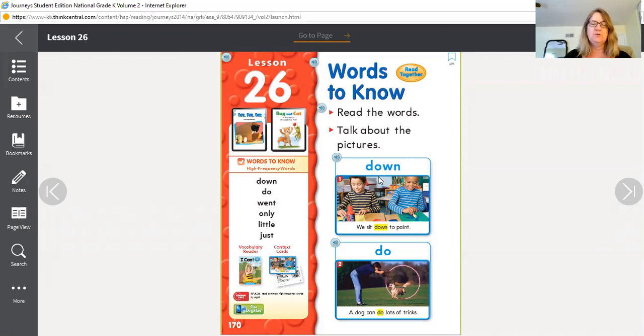The first word is down. Begins with a D. Down. The OW makes the OW sound and N at the end. We sit down to paint. So down, D-O-W-N, down.